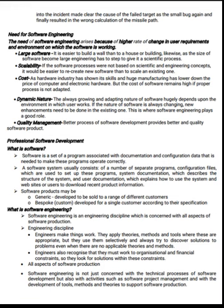What is Software? Software is a set of programs associated with documentation and configuration data that is needed to make these programs operate correctly. A software system usually consists of a number of separate programs, configuration files used to set up these programs, system documentation which describes the structure of the system, user documentation which explains how to use the system, and websites for users to download recent product information. Software products may be generic, developed to be sold to a range of different customers, or bespoke, custom developed for a single customer according to their specification.